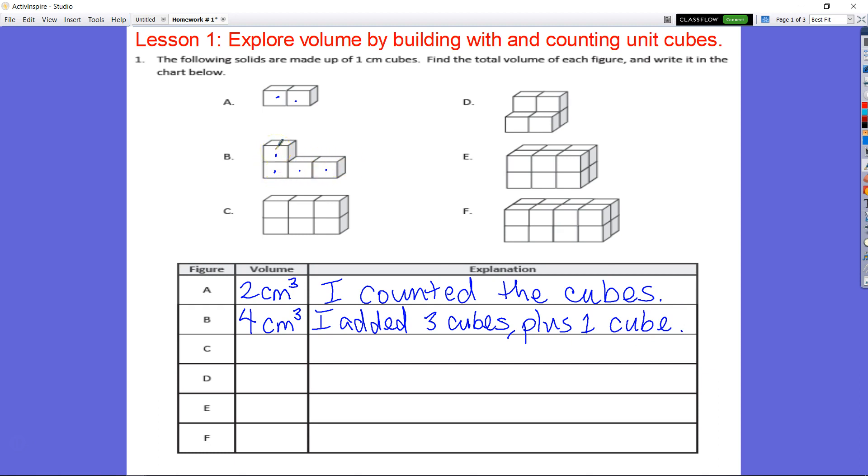So let's take a look at C. And C is we have one, two, three for my layer. And in each layer, my first layer is three. And then I have one, two, three more in my second layer. So I have three plus three or you can say six cubic centimeters. I added three cubes plus three cubes. Or another thing we could have put is we multiplied three cubes in each layer times two layers.